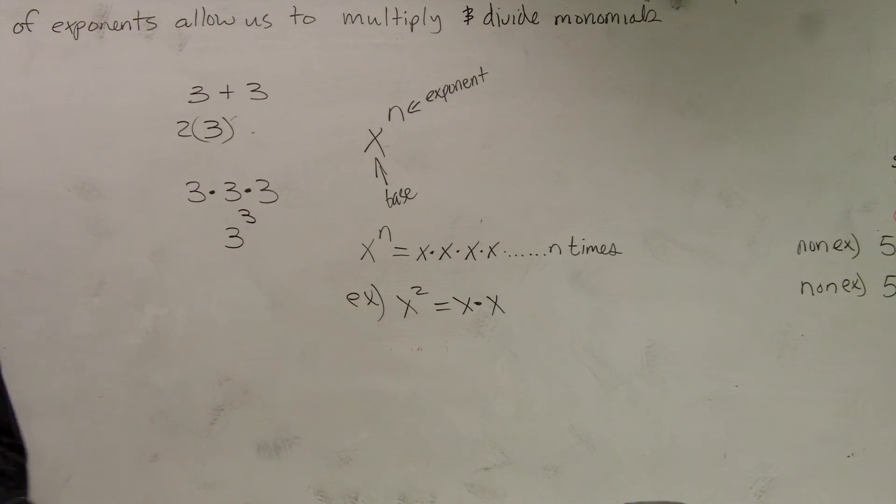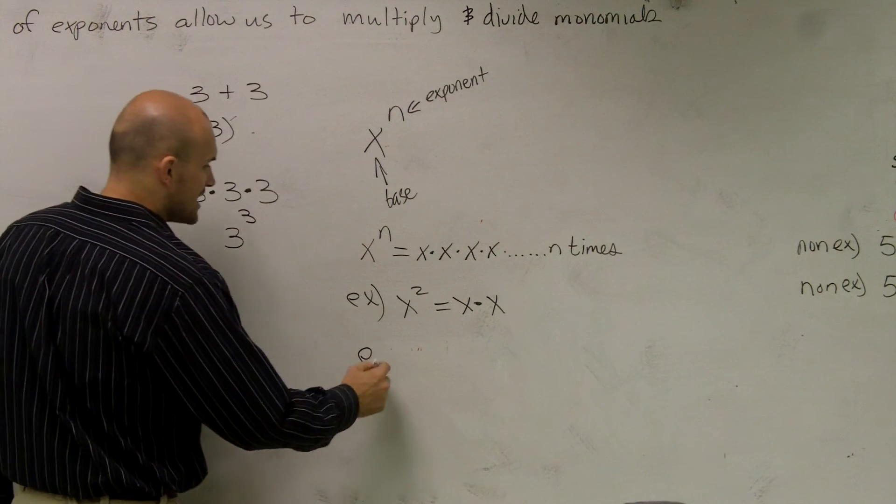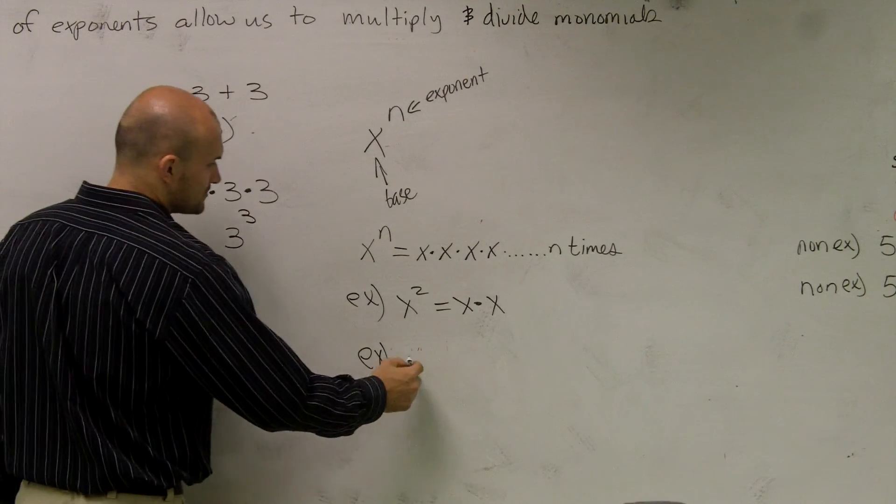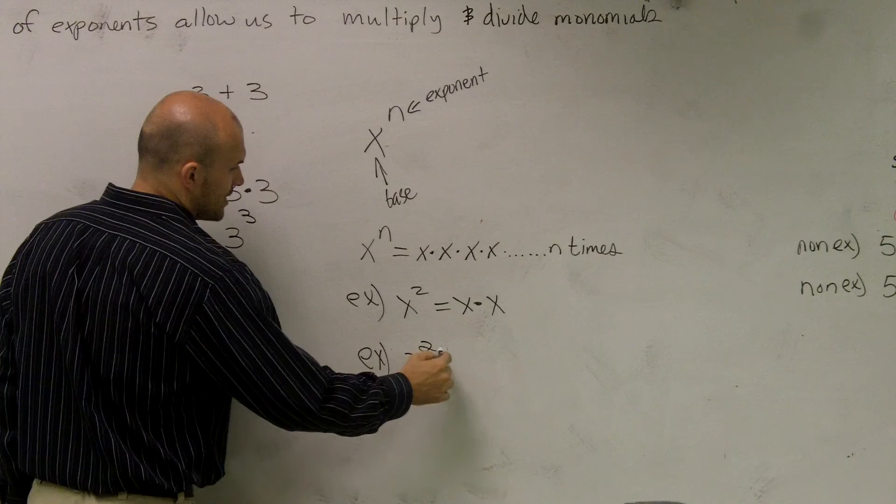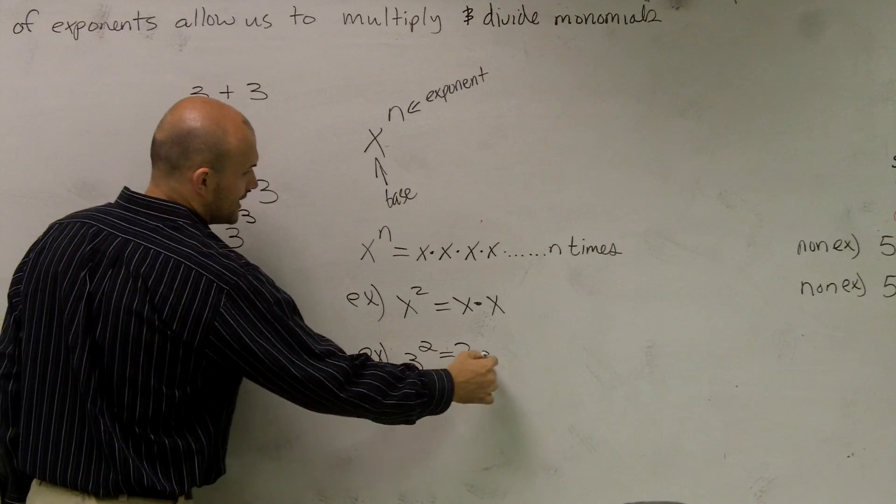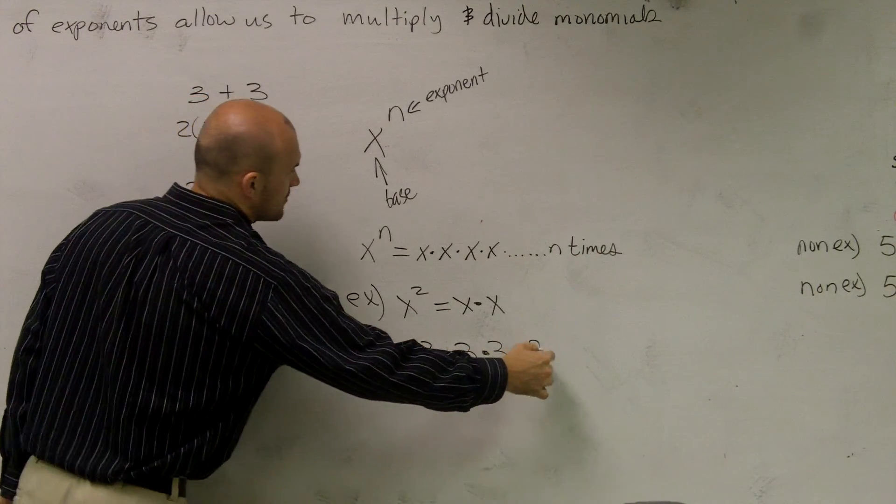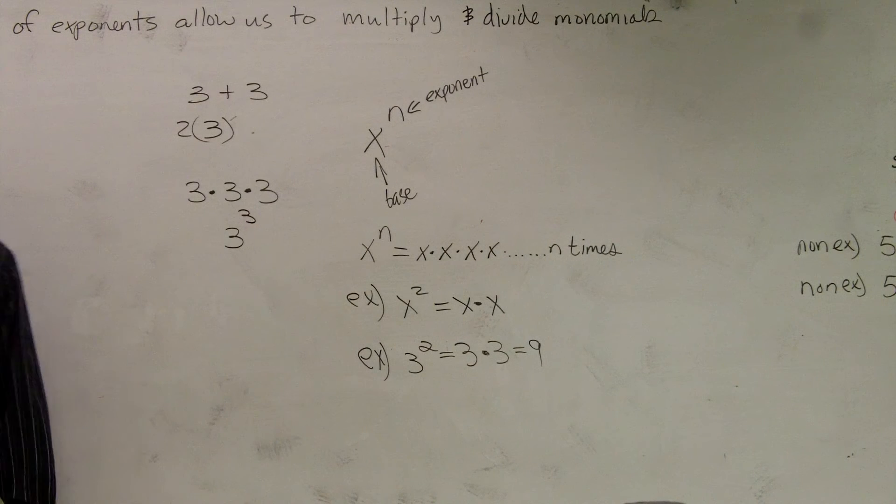Okay? Now, let's go to maybe one that we can actually calculate the answer for. So another example would be, how about 3 squared? Well, that equals 3 times 3, which equals 9.